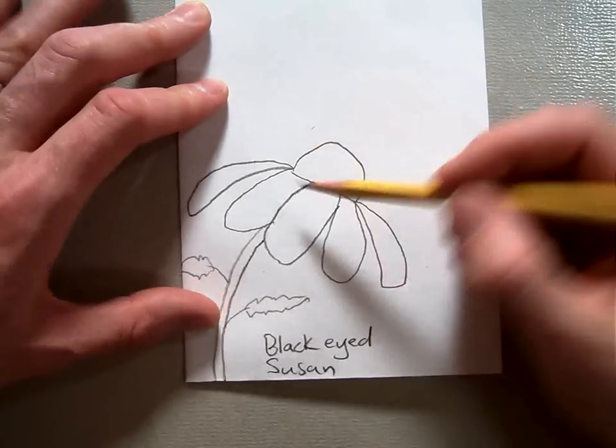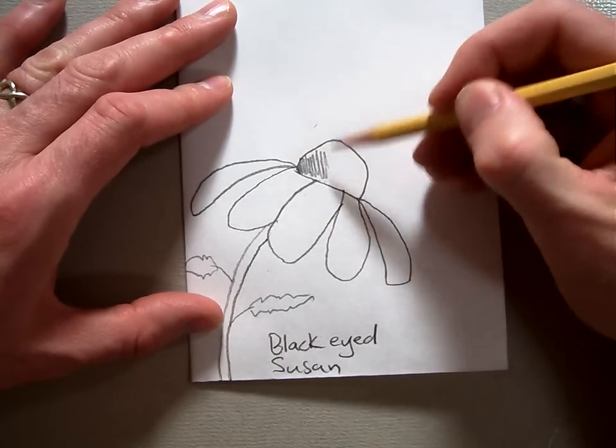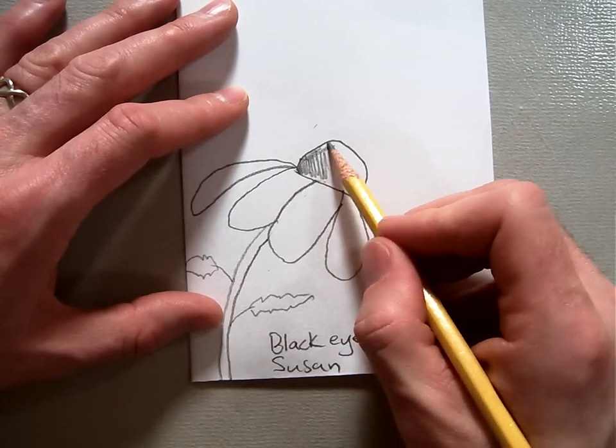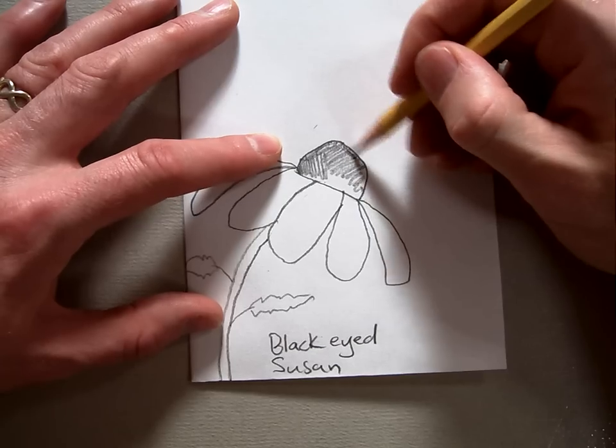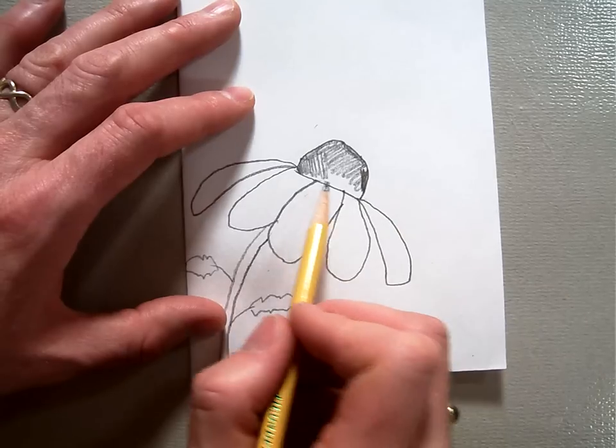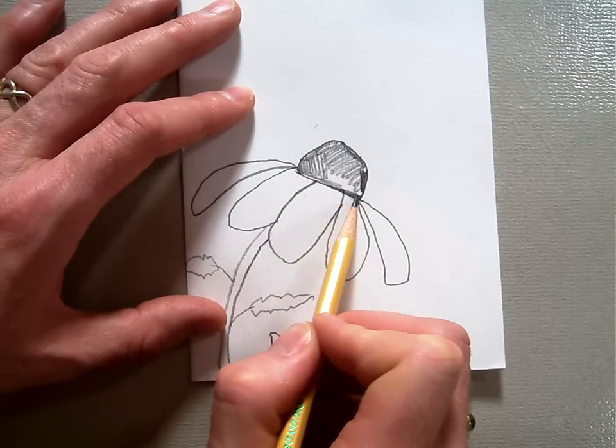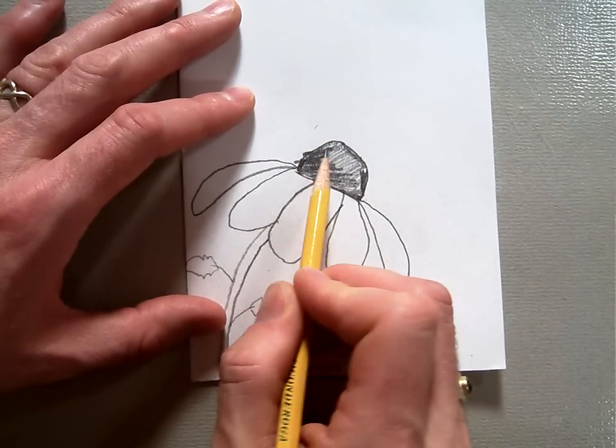Then once you get that done, you can color or rather shade in this center portion. Do it neatly, kind of color in the line, just so you remember that this centerpiece is really dark and usually really brownish black because it's a black-eyed Susan and it just has a different color than the other ones, than a daisy or something.